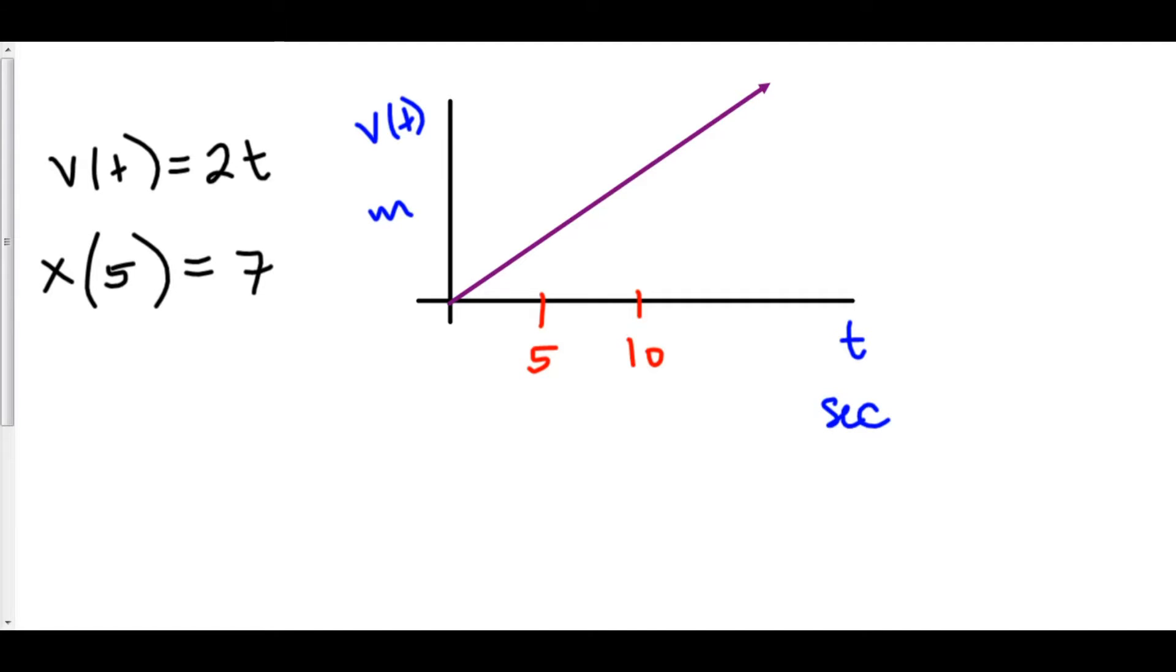One interpretation of the integral is that of net change. For example, if you find the integral of velocity from 5 to 10, you're finding the net change of position.